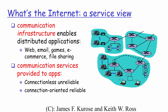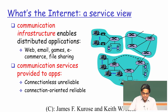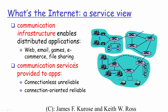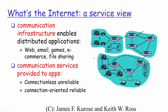From a services point of view, the previous slide defined the internet from the individual components perspective. In terms of services being offered, you could classify them based on the kind of applications running — such as web applications, email applications, e-commerce applications like Amazon or Flipkart, or file sharing applications like Dropbox. With respect to communication services provided to network applications, you typically have either a connectionless unreliable service or a connection-oriented reliable service.